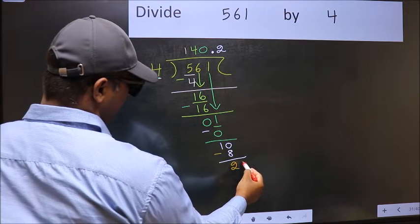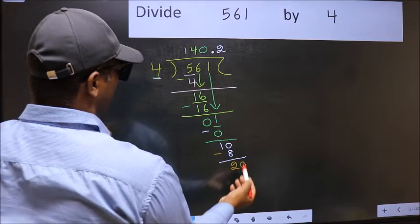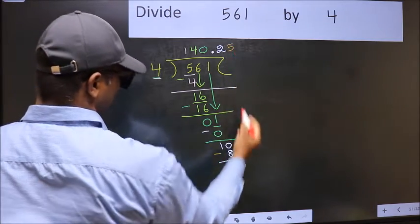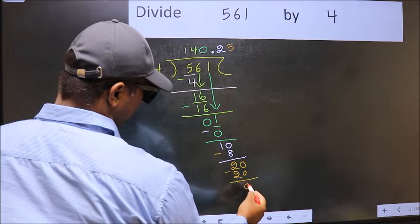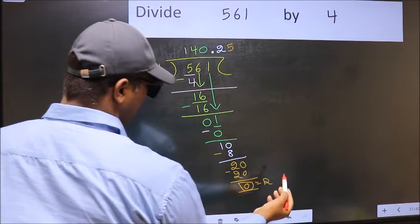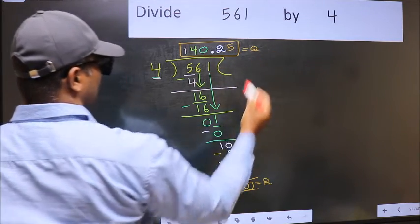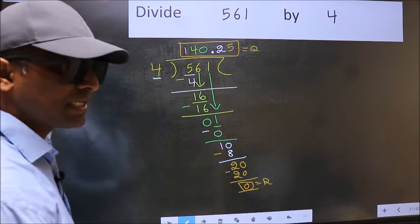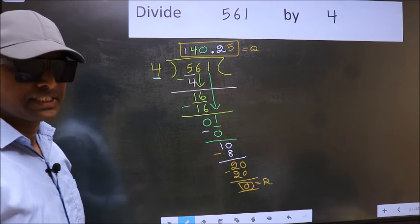We already have decimal. So directly take 0. When do we get 20 in 4 table? 4 fives, 20. Now you subtract, you get 0. So this is our remainder. And this is our quotient. Did you understand where the mistake happens? You should not do that mistake.